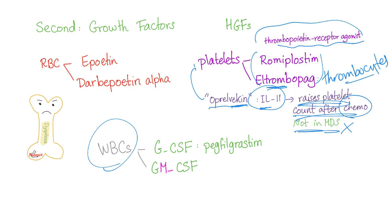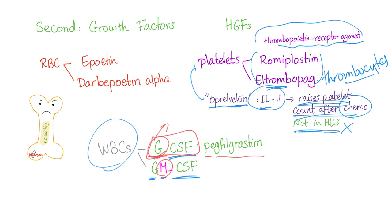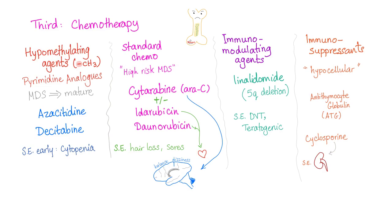To boost white blood cells, use granulocyte colony-stimulating factor (G-CSF) or granulocyte-monocyte colony-stimulating factor (GM-CSF). Refer to the hematopoiesis slide to understand the difference between granulocytes and monocytes. A specific G-CSF agent is pegfilgrastim.